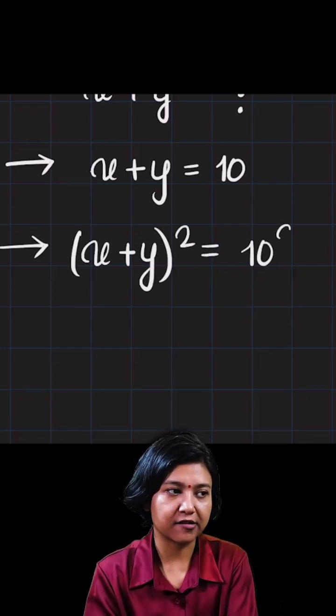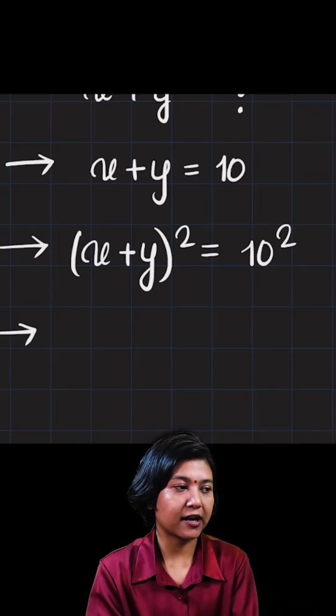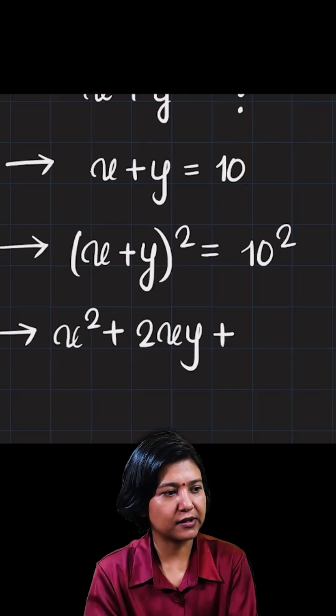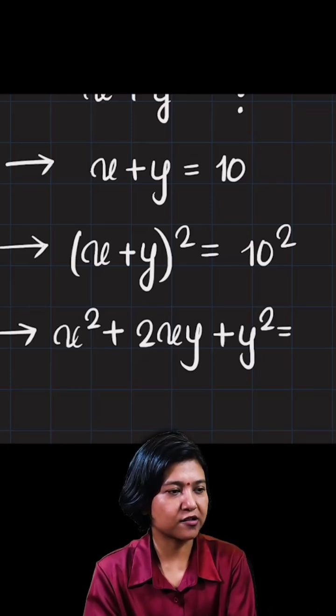And now 10 squared is what we do on the right side. a plus b the whole square, you better know a squared plus 2ab plus b squared. That has to be equal to the square of 10,